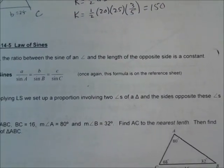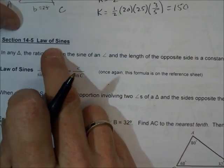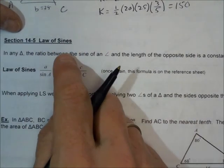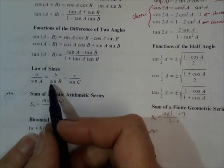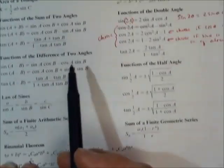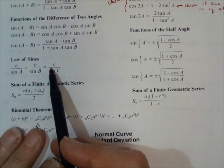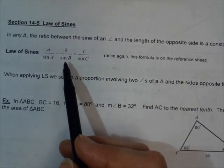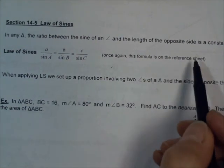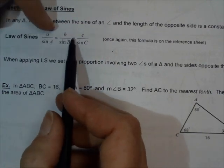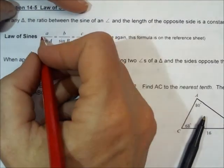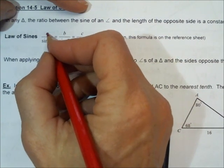Now the next thing we're going to talk about is something called the law of sines. Yesterday we learned about the law of cosines. There's another formula — the law of sines — which is actually a little bit easier and faster to use. The law of sines is also on the formula sheet. When you use the law of sines, you're only going to use two of the three parts: a over sine A, b over sine B, c over sine C.